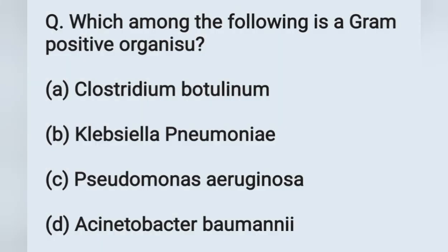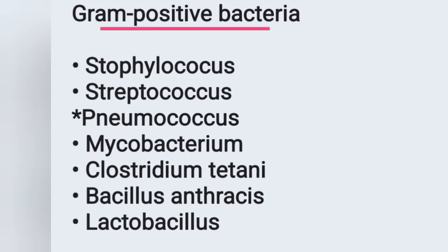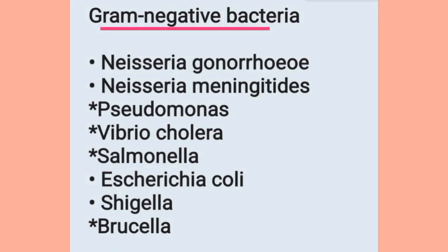Next question: Which among the following is a gram positive organism? Option A: Clostridium botulinum, option B: Klebsiella pneumoniae, option C: Pseudomonas aeruginosa, option D: Acinetobacter baumannii. Gram positive bacteria include Staphylococcus, Streptococcus, Pneumococcus, Mycobacterium, Clostridium tetani, Bacillus anthracis, and Lactobacillus. So Clostridium in our options is the correct answer.